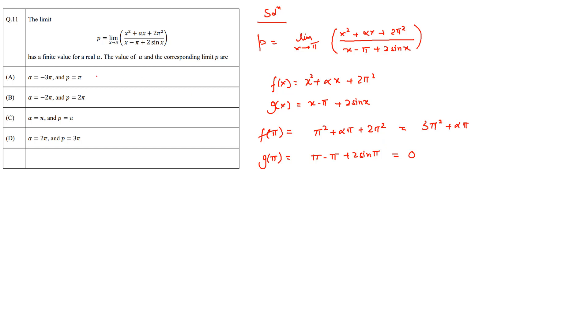Now in order to have a finite value of p, the numerator also has to be zero. Thus f of pi should equal zero. This implies that 3 pi squared plus alpha pi has to equal zero, and from here we can easily find that alpha simply becomes minus 3 pi.